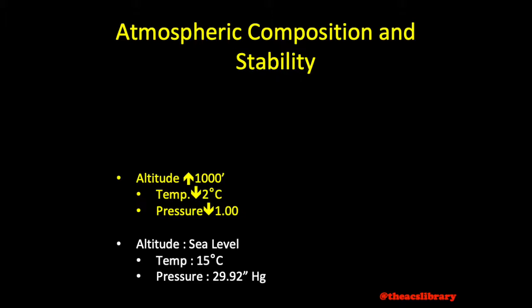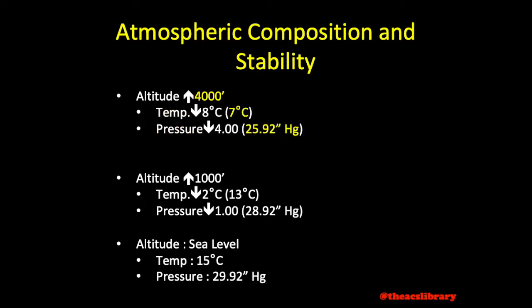So based on the standard day lapse rates, at 1,000 feet MSL, one may expect to see a temperature of 13 degrees Celsius and a pressure of 28.92 as we decrease our temperature by 2 and pressure by 1 inch. Following the same principle, at 4,000 feet MSL, what temperature and pressure might one expect to find? If you've answered 7 degrees Celsius and 25.92 inches of mercury, you'd be correct.